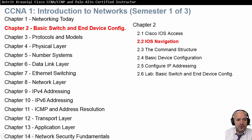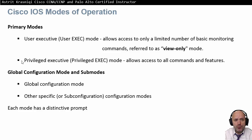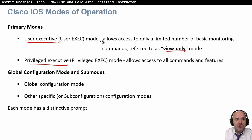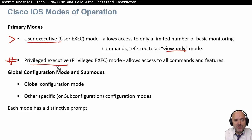Cisco has two primary modes of operation. The first is the user executive mode, which is like a view-only restricted mode — you can't do that much. To configure the switch, you need to access the privilege executive mode, which allows you to access all commands and features. User exec mode is indicated by a greater-than sign (>), and privilege exec mode is indicated by a hash sign (#).